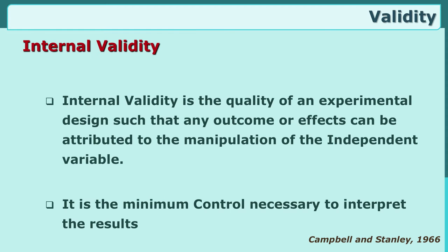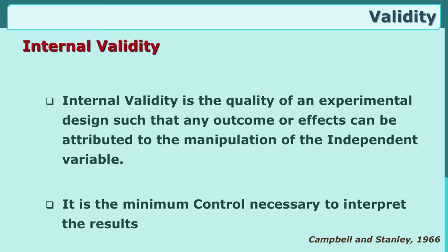Internal validity is the quality of an experimental design such that any outcome or effects can be attributed to the manipulation of the independent variable. It is the minimum control necessary to interpret the results. As essential characteristics of experimental design, control and manipulation are the two essential characteristics. The internal validity refers to these — we must achieve internal control and for that we must manipulate.